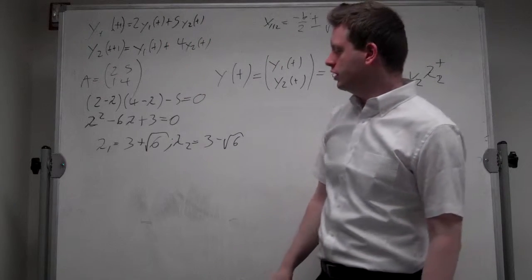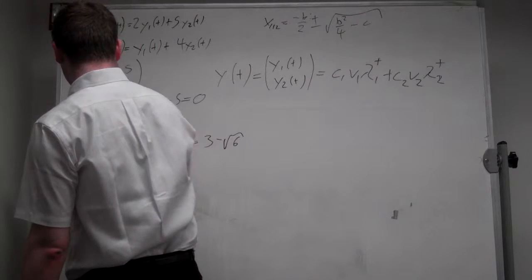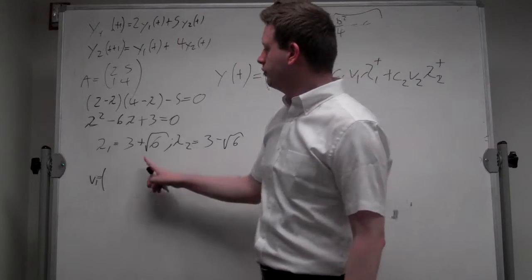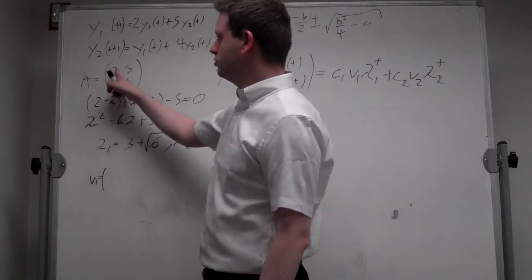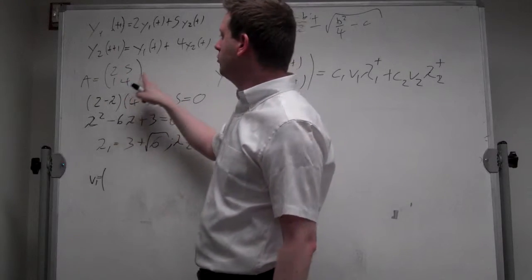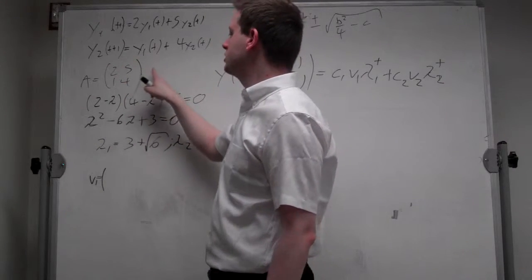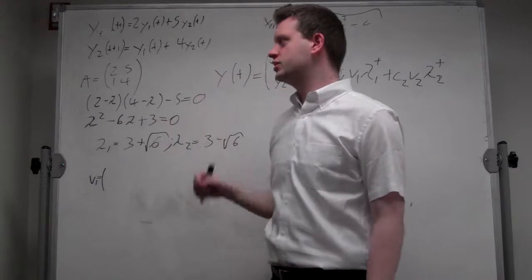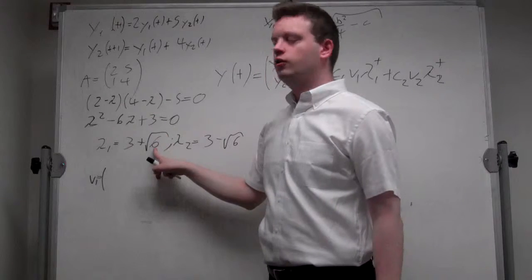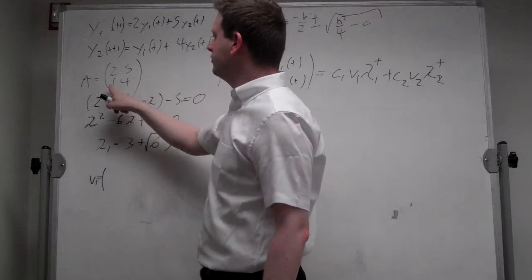So let's find the eigenvectors. First eigenvector, we will have to plug this into the A matrix. So subtract lambda from the diagonal, then multiply this matrix, the resulting matrix, times the first eigenvector must give us 0. So in the top left corner, we will get minus 1 minus square root of 6, 5, 1, 1 minus square root of 6.